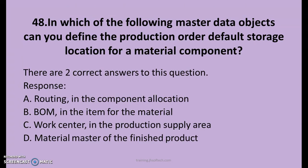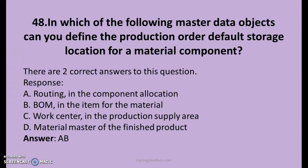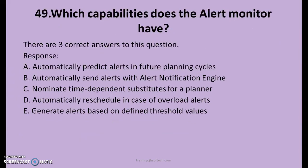48th question. In which of the following master data objects can you define the production order default storage location for a material component? There are two right answers. A. Routing in the component allocation, B. Bill of material in the item for the material, C. Work center in the production supply area, D. Material master of the finished product. The right answers are A and B: routing in the component allocations, and BOM in the item for the material.